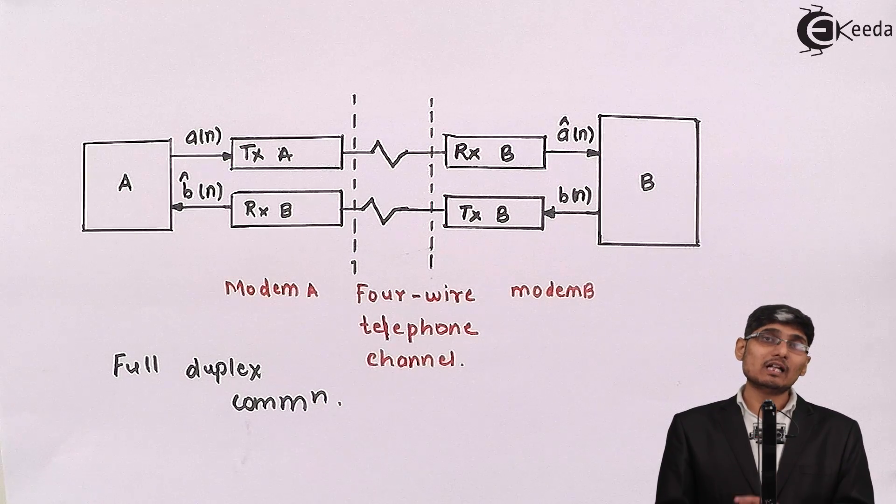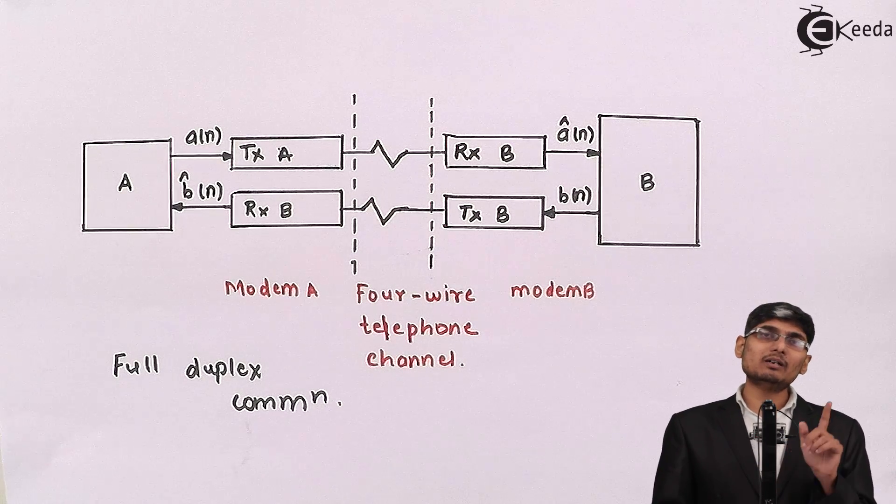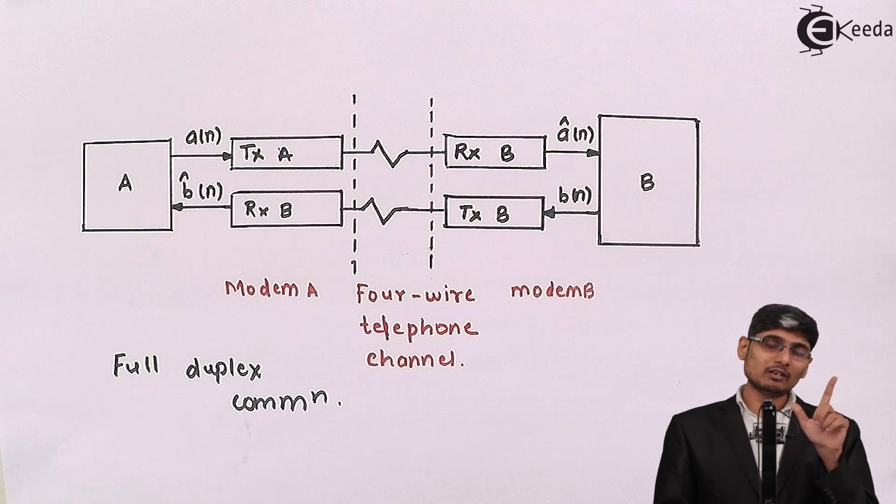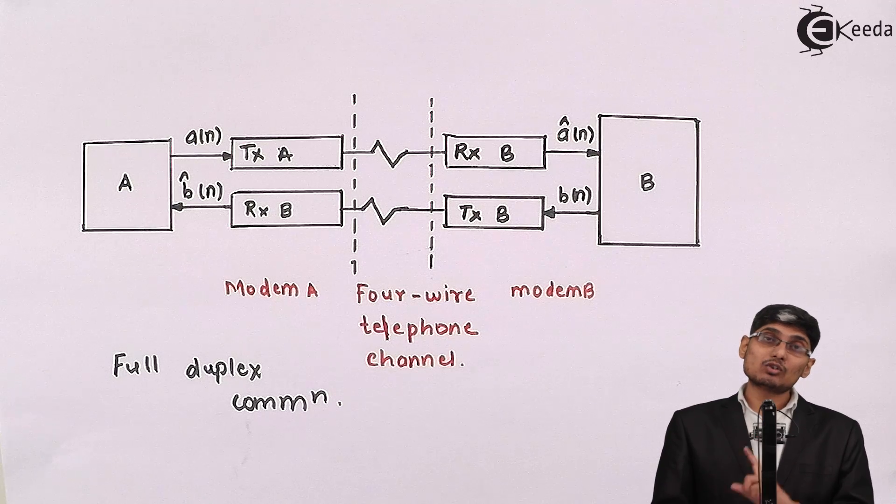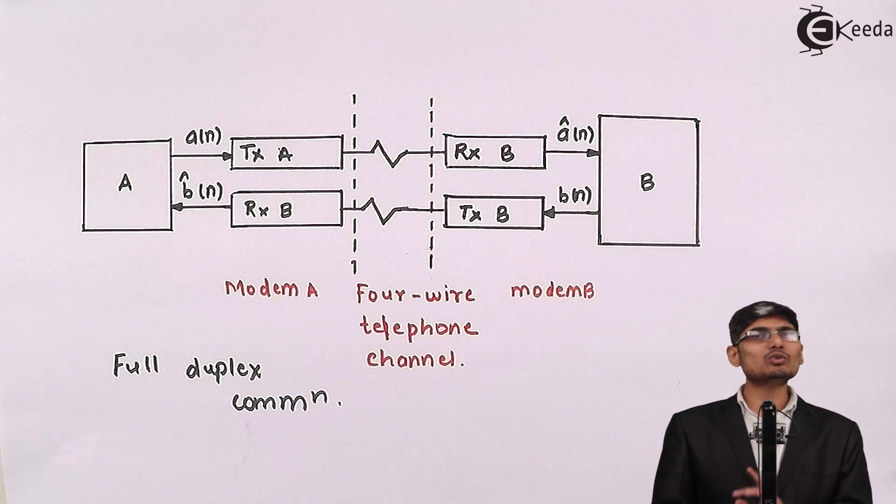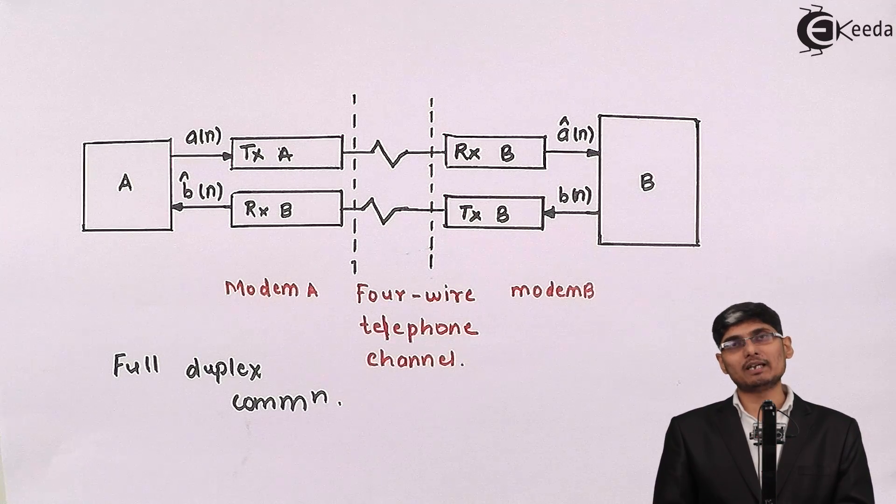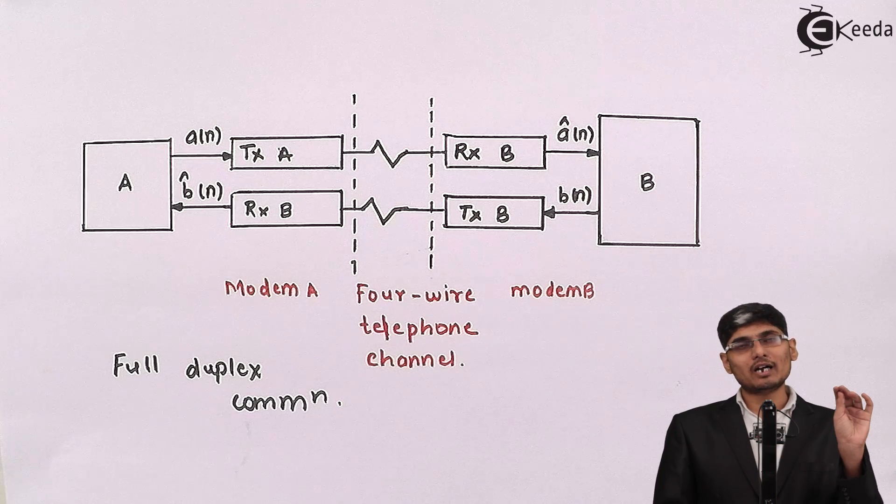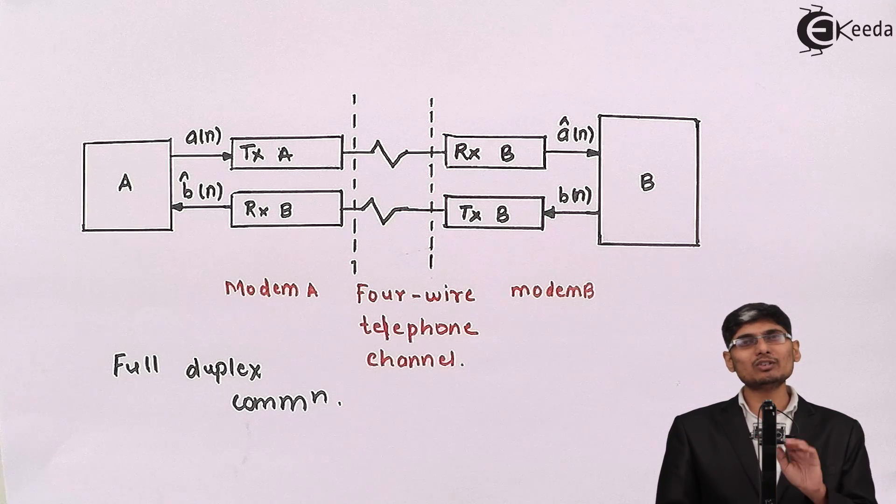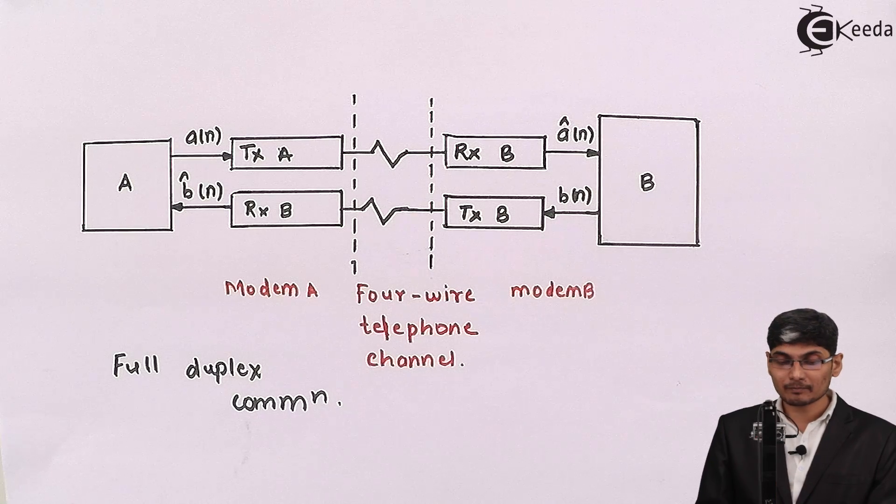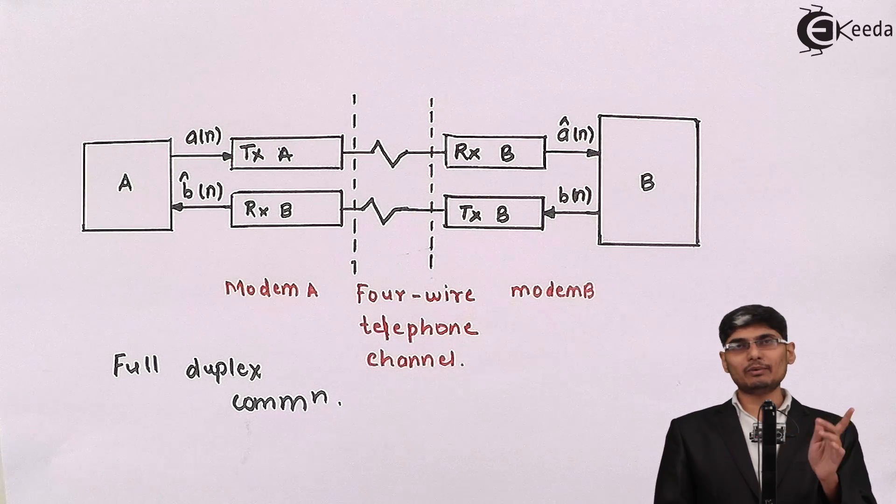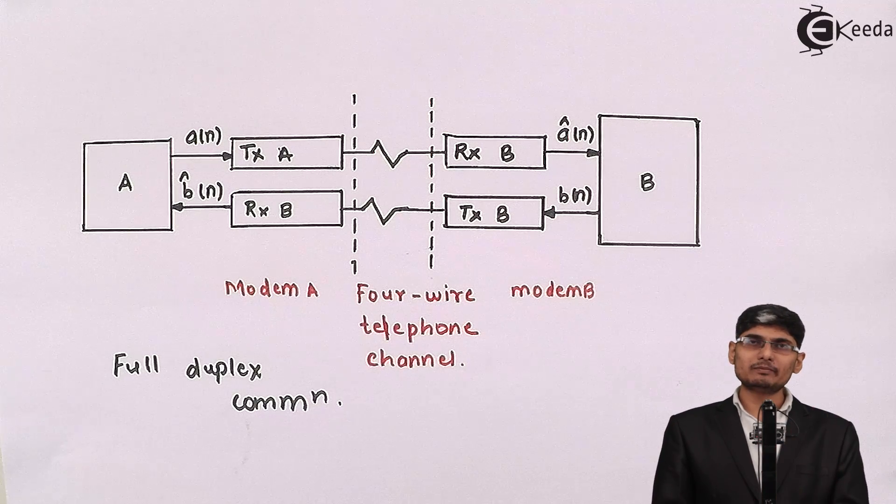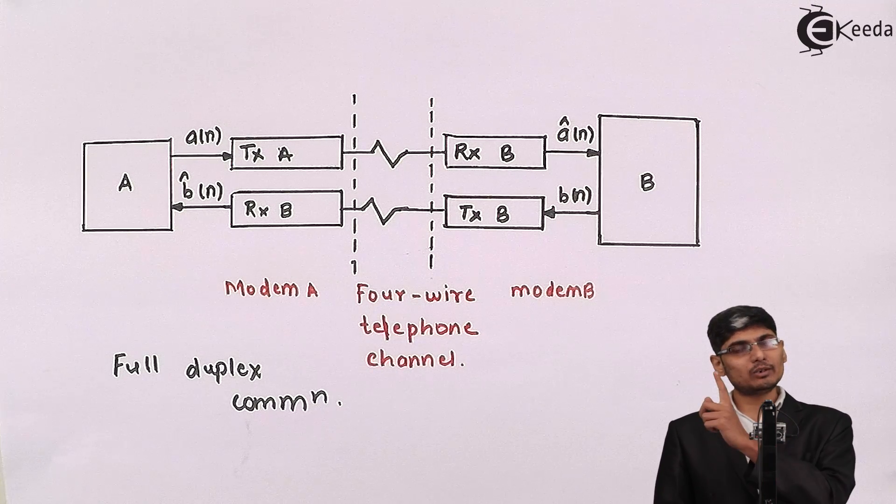As the number of users increases, the implementation part becomes more and more tedious. So it is beneficial to use switched mode communication. What is this switched mode communication system? Whenever you want to communicate, dial the number. That number will be forwarded to the central office. The central office will switch your services to another central office which will be connecting to user B.